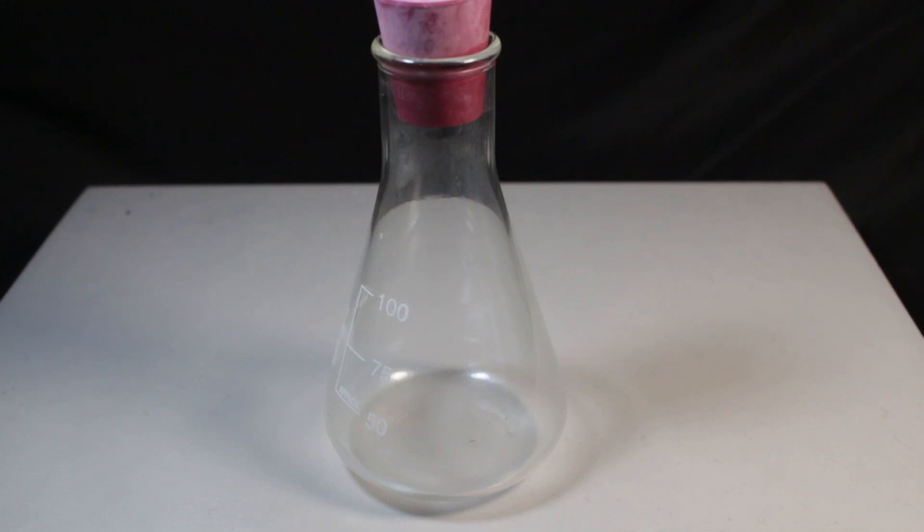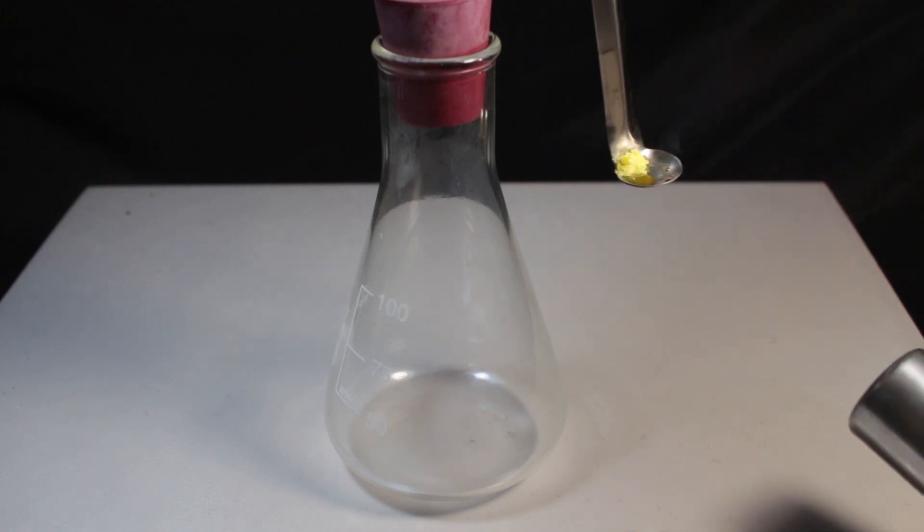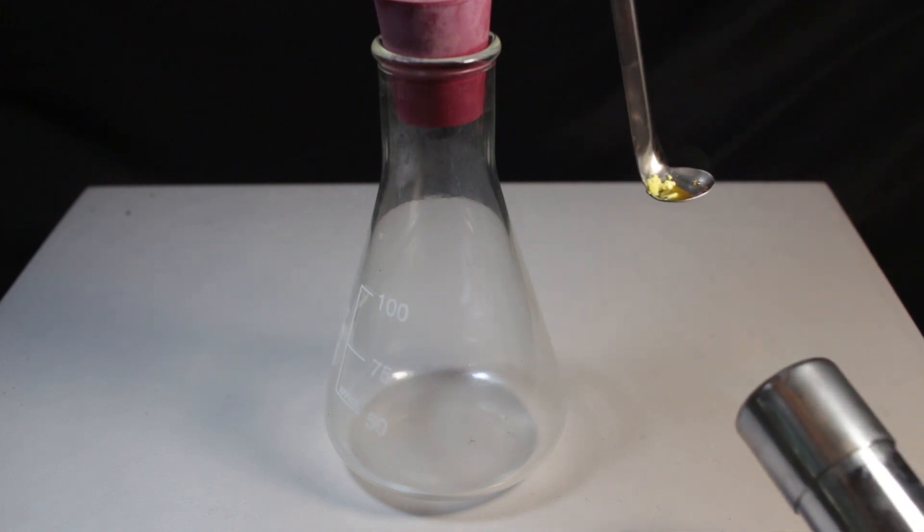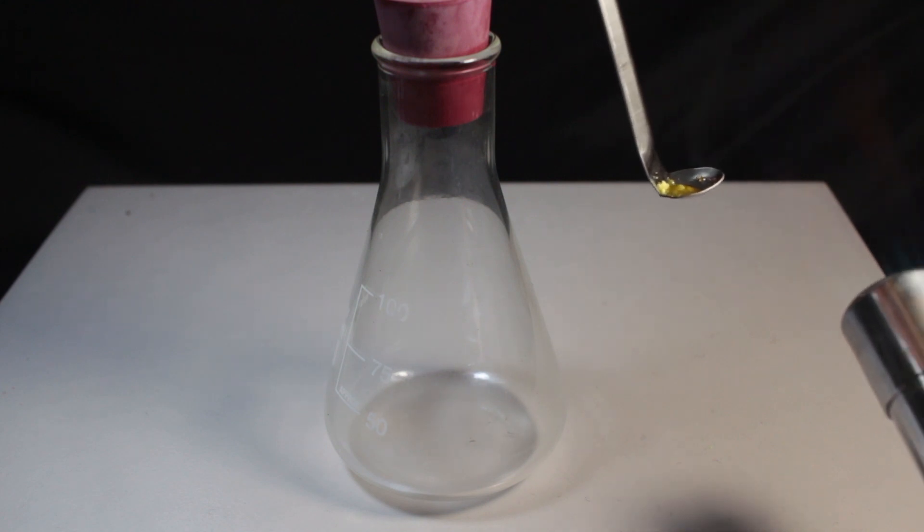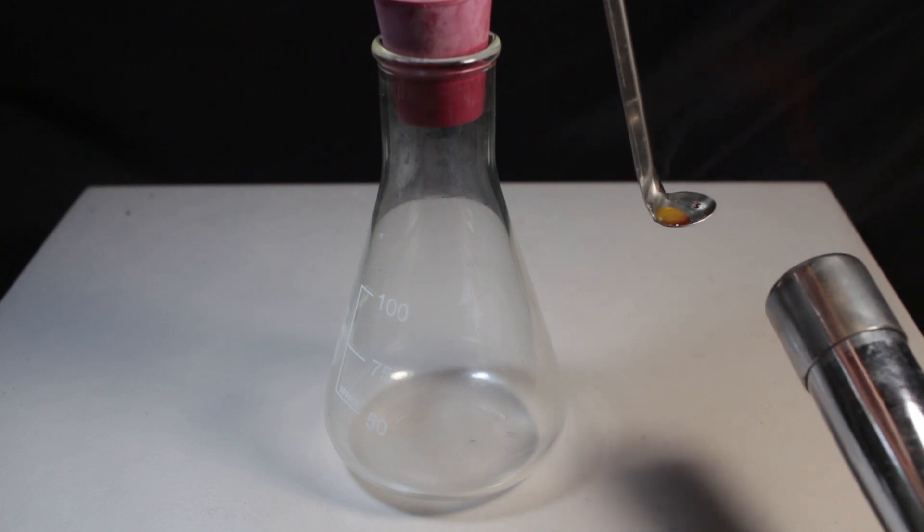Here I have conical flask filled with oxygen and here is sulfur, yellow powder, which melts at pretty low melting point. You see it easily turns into clear liquid, which fast turns brown, deep brown and virtually black.